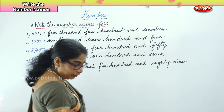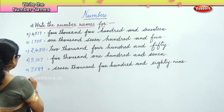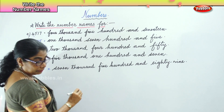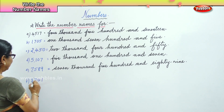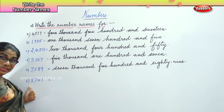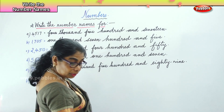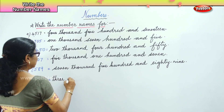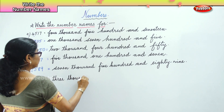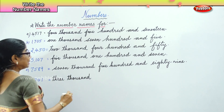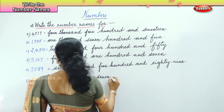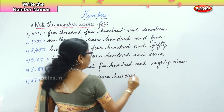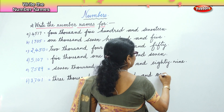The next number is 3701. Read that number. Three thousand seven hundred and one. Good.